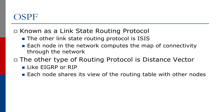OSPF is known as a link state routing protocol. The other link state routing protocol is IS-IS, where each node in the network computes the map of connectivity through the network. The other type of routing protocol is known as distance vector — examples include Cisco's EIGRP and RIP, where each node shares its view of the routing table with other nodes.